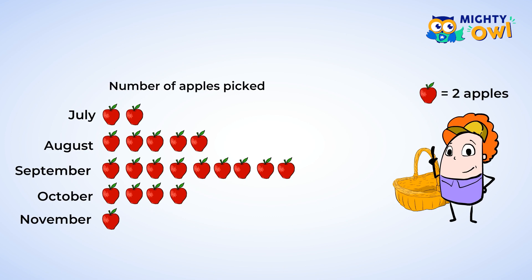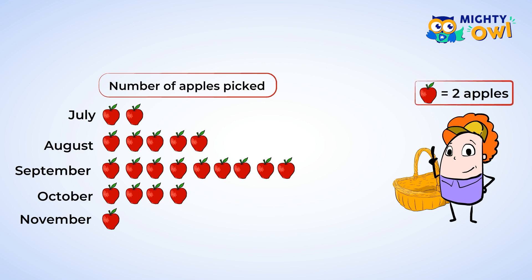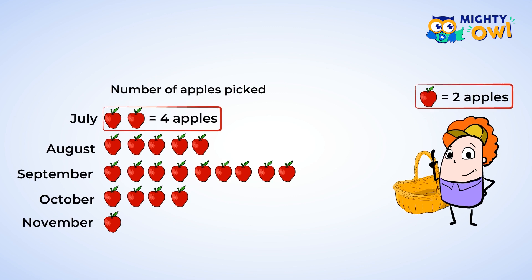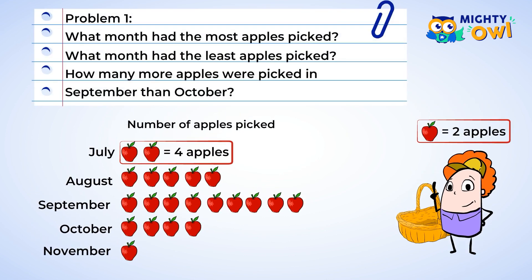Take a moment to look at this graph. First, we want to look at the title — it'll tell us what this graph is showing us. The graph is showing us the number of apples that are picked each month. Did you find the key? The key tells us that each picture of an apple represents 2 apples. So we can tell by looking at the 2 pictures of apples next to July that 4 apples were picked in July. Now that we understand what the graph is showing us, let's answer those questions.